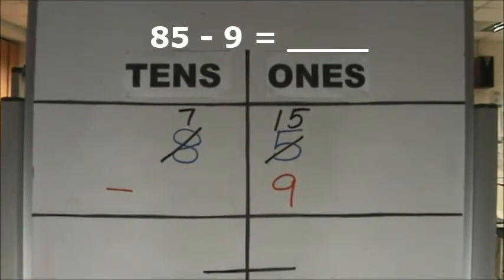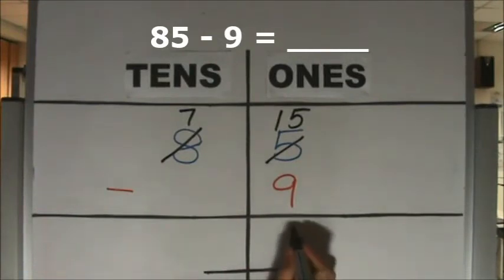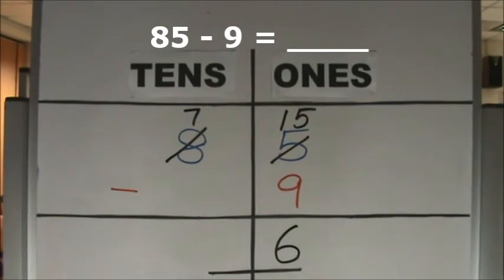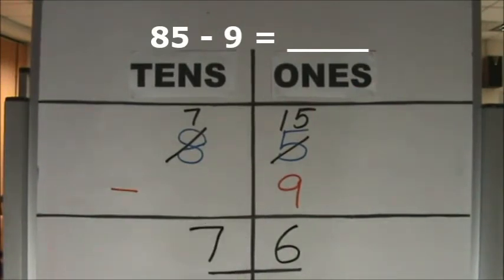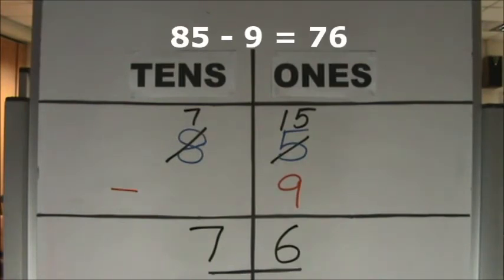Now we have enough ones to take away 9 ones. 15 ones minus 9 ones equal 6 ones. We get 76. 85 minus 9 equals 76. Thanks for listening.